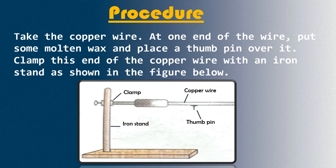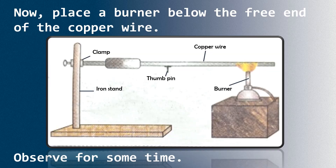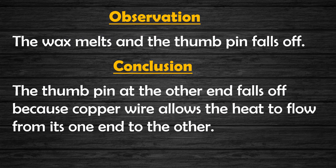Take the copper wire. At one end of the wire, put some molten wax. Now place a thumb pin over the wire. Clamp this end of the copper wire with an iron stand as shown in the figure. Now place a burner below the free end of the copper wire and observe for some time. You will observe that the wax melts and the thumb pin falls off. We can conclude that the thumb pin falls off because the copper wire allows heat to flow from one end to the other.